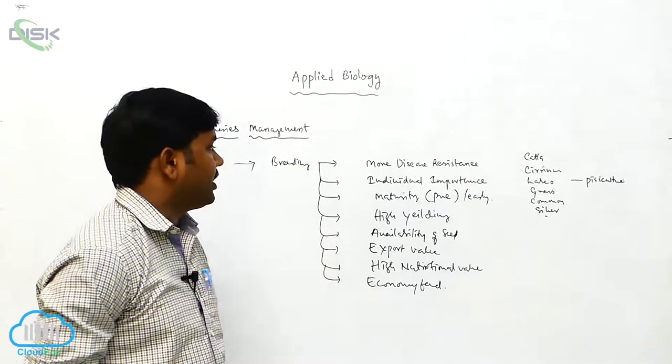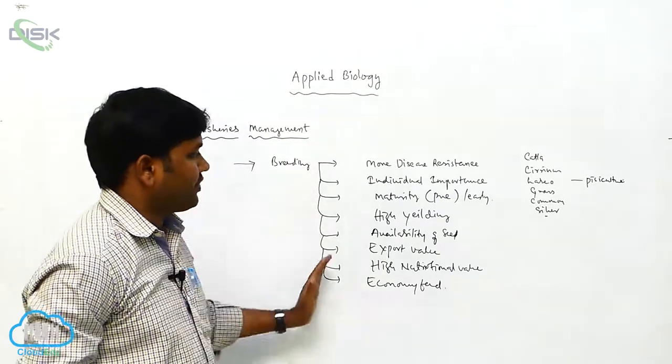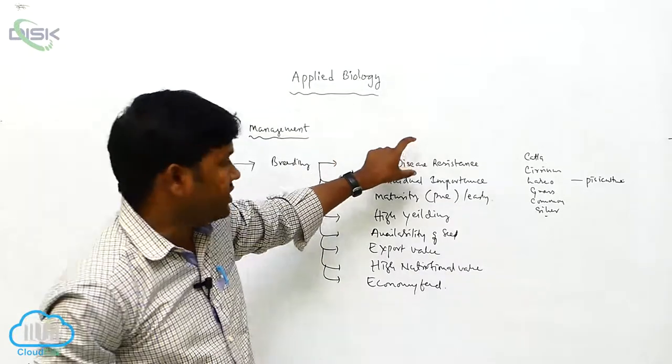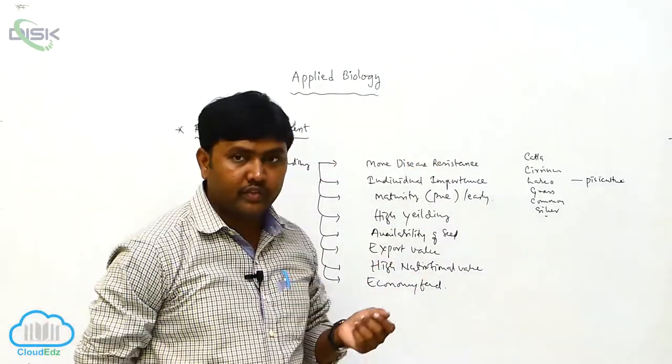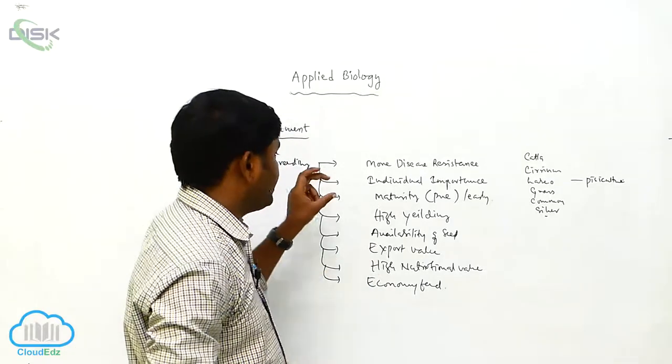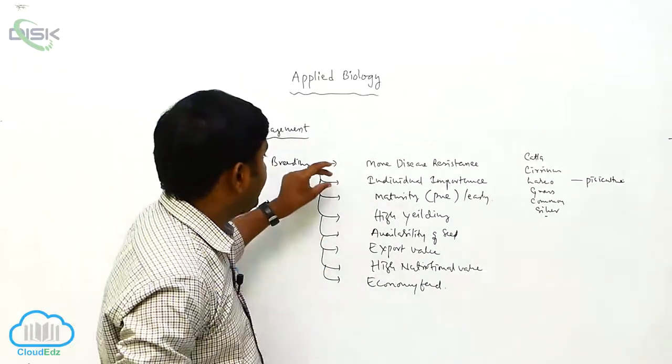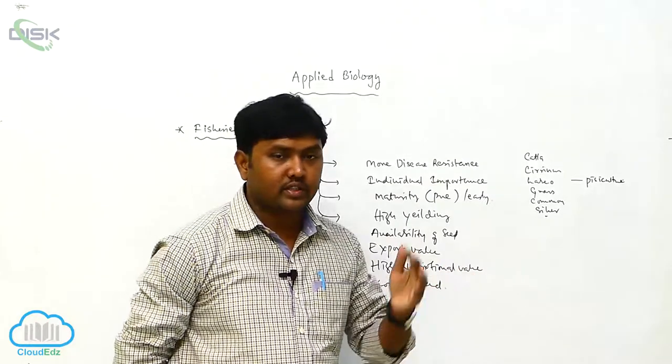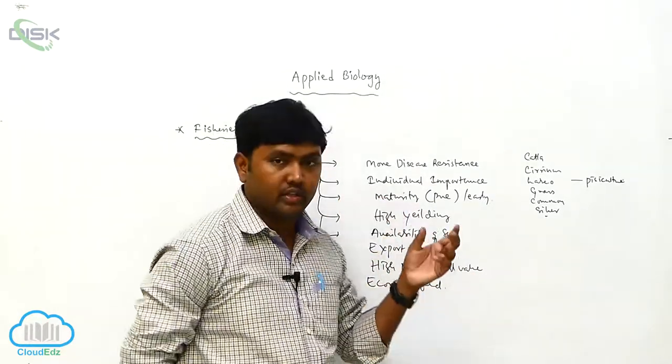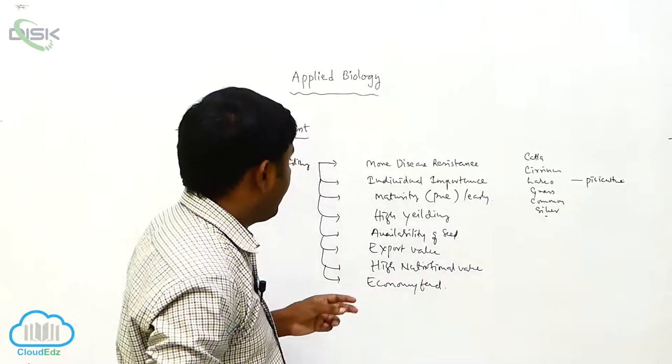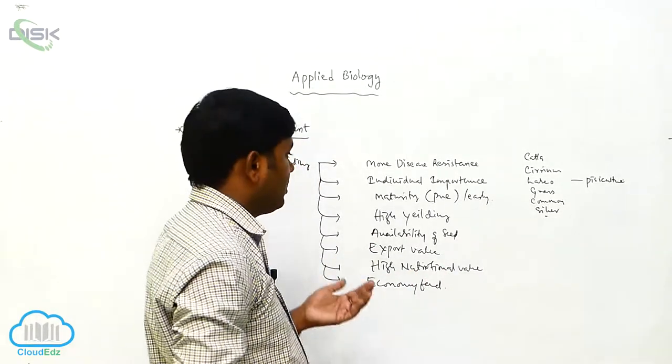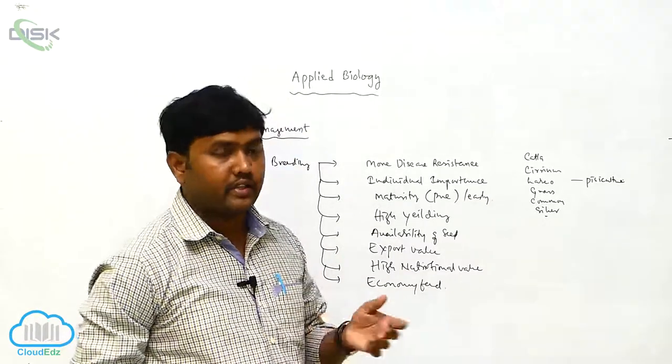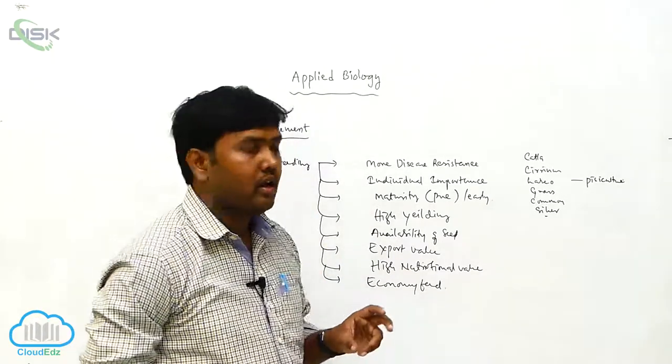For the breeding of fish, we can observe these characteristics: more disease resistance can be seen in the desirable species, and individual importance, so the characteristics of that individual species and maturity, early maturity.